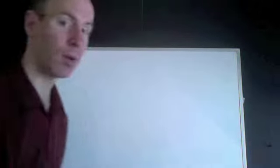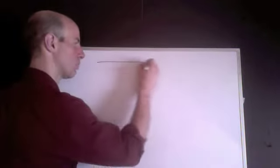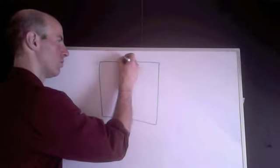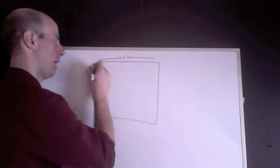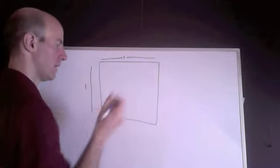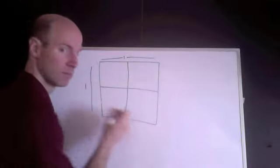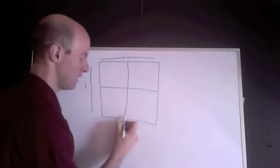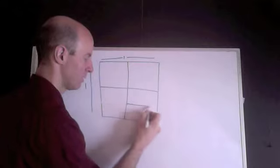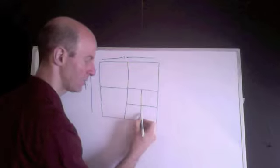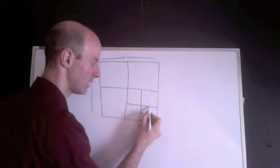I'm sure you remember this problem. You're given a big square with dimensions of 1 by 1, and then this square is divided into 4 squares, 4 smaller squares, and then one of those squares is divided into 4 more smaller squares, and the final square is divided into 4 teeny squares.